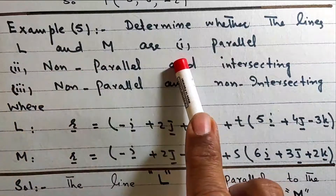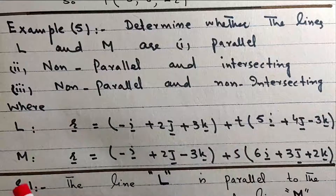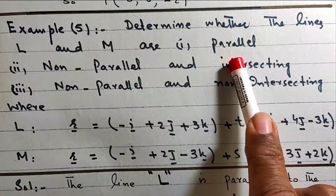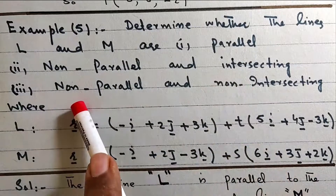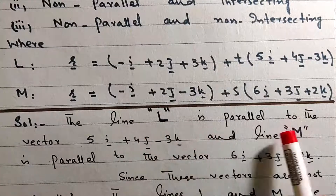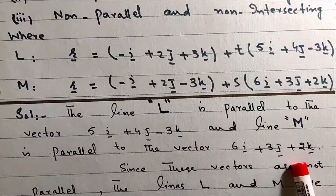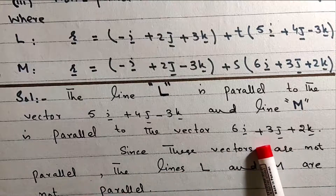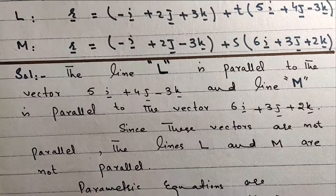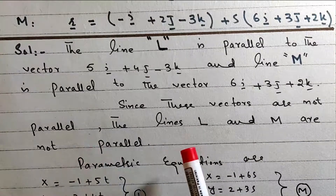Example: Determine whether the lines L and M are parallel, non-parallel intersecting, or non-parallel non-intersecting. Line L is parallel to vector (5, 4, −something) and line M is parallel to vector (6, 3, 2). Since these vectors are not proportional, the lines L and M are not parallel.